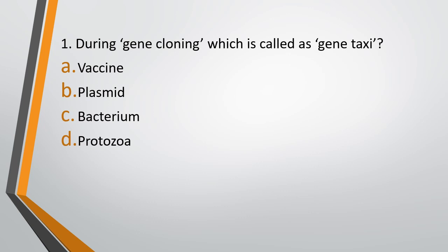Question number 1. During gene cloning, which is called as gene taxi? Option A, vaccine. Option B, plasmid. Option C, bacterium. Option D, protozoa. The correct answer is option B, that is plasmid, which is a vector, is called as gene taxi.